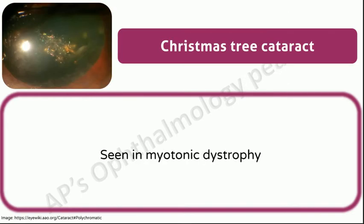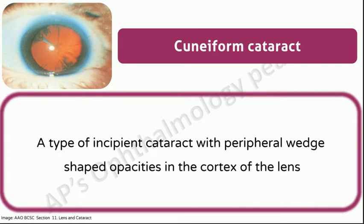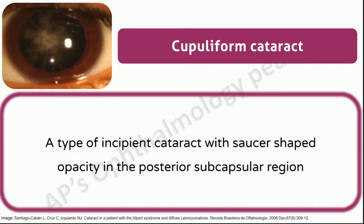Christmas tree cataract: seen in myotonic dystrophy. Complicated cataract: cataract occurring secondary to an intraocular disease. Cuneiform cataract: a type of incipient cataract with peripheral wedge-shaped opacities in the cortex of the lens. Because the opacity is in the periphery of the lens, when the pupil is dilated, the peripheral opacities interfere with light rays and therefore such a cataract gives rise to vision that is worse at night.